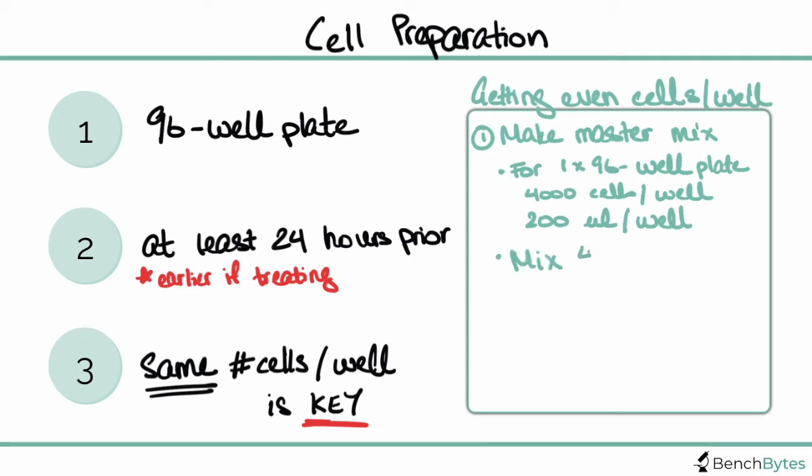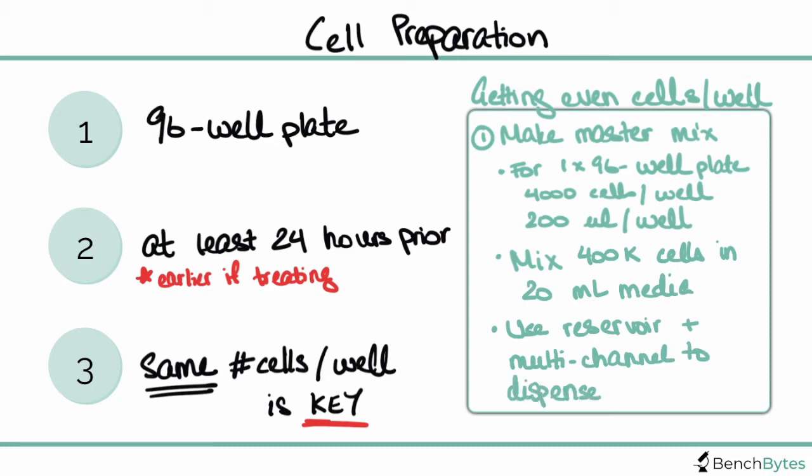To make this, we're going to mix 400,000 cells counted out previously into 20 mL of tissue culture media. Mix that really well, then use a reservoir and a multi-channel pipette to dispense these cells very evenly into our 96-well plate. This is very important because any change in the number of cells in your MTT will severely mess up your results.